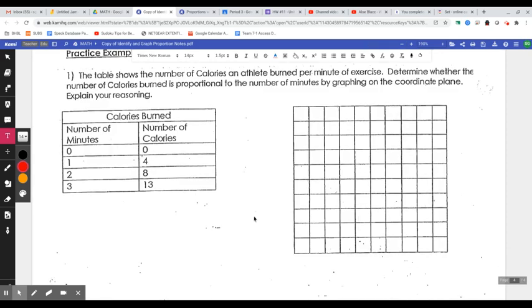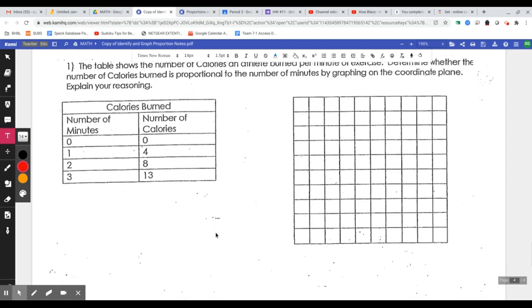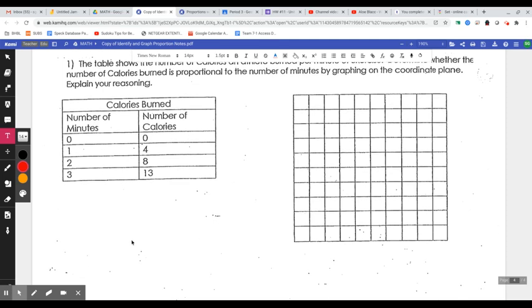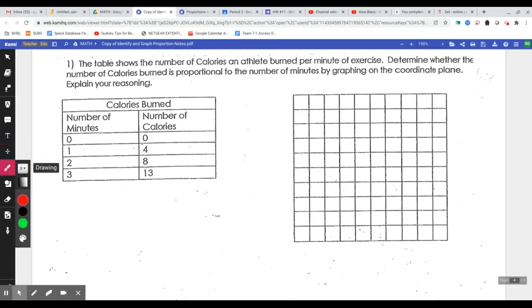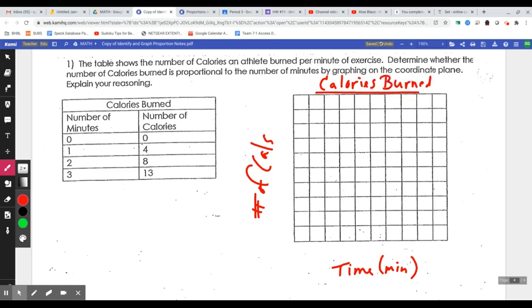Practice number one. The table shows the number of calories an athlete burned per minute of exercise. Determine whether the number of calories burned is proportional to the number of minutes by graphing on the coordinate plane. Explain your reasoning. Okay. So let's space this out again. We've got time. So this will be on the bottom here. This will be minutes. So this is time. That'll be minutes. And then we've got number of calories. So number of calories. We should probably put a title. Calories burned.